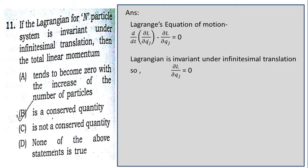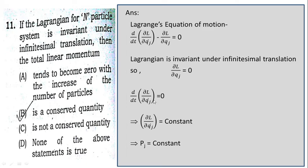Since the Lagrangian is invariant under infinitesimal translation, ∂L/∂q_j equals zero — meaning L is not changing when q_j changes to q_j plus δq_j. So the second term vanishes, leaving d/dt of ∂L/∂q̇_j equals zero. Therefore ∂L/∂q̇_j equals p_j, the canonical momentum, which is constant. So option B is correct.